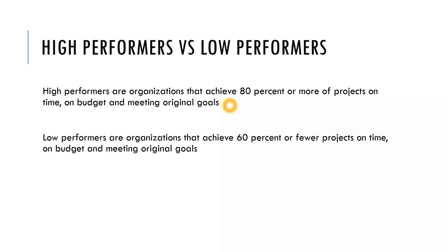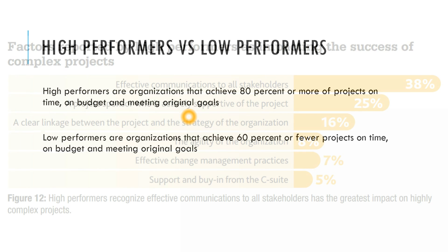Low performers are organizations that achieve 60% or fewer projects on time, on budget, and meeting original goals. So now you can distinguish between a high performing organization and a low performing one. Note that these are definitions specific to this report, not a market-standard definition. We discussed this because these categories are used in the graph listing all the factors.